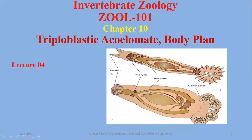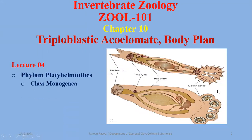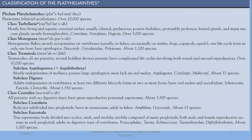In this short video we are going to discuss Phylum Platyhelminthes, Class Monogenea. This is a small class described in your text. We call them monogenetic flukes, mostly ectoparasites of vertebrates, and there are 1100 described species.